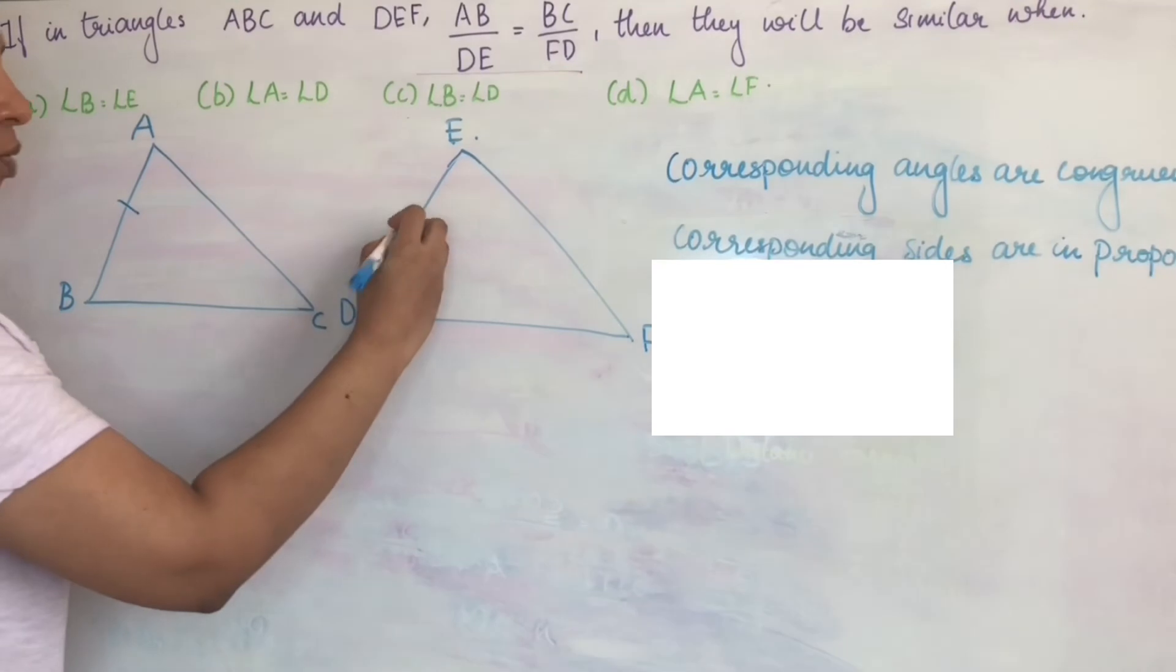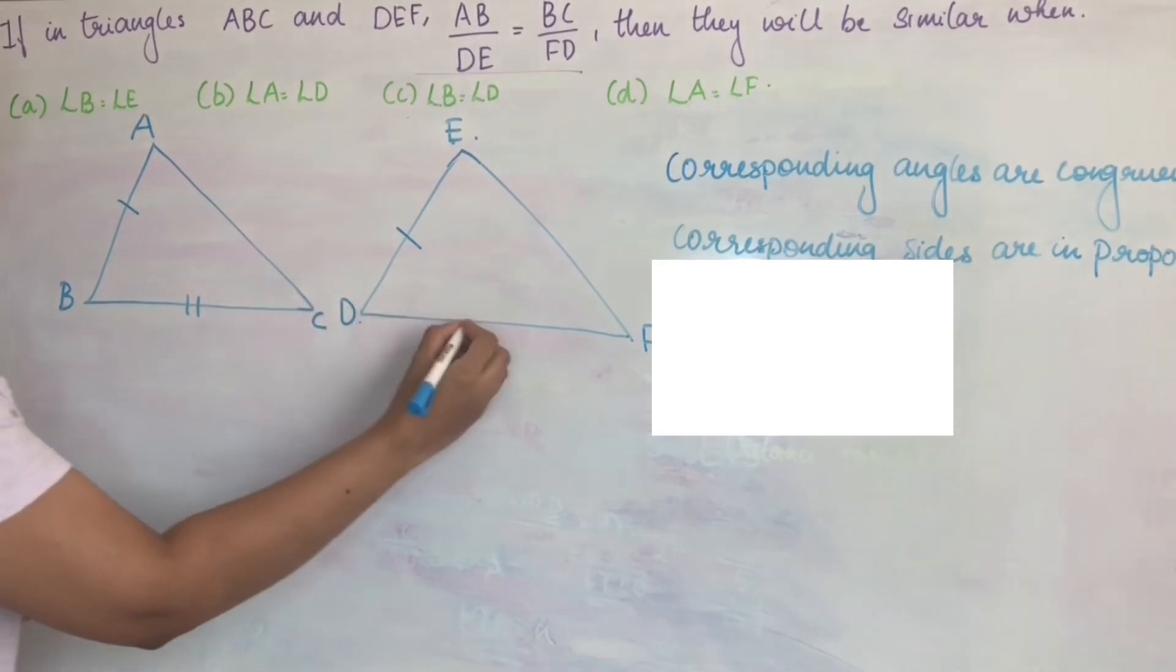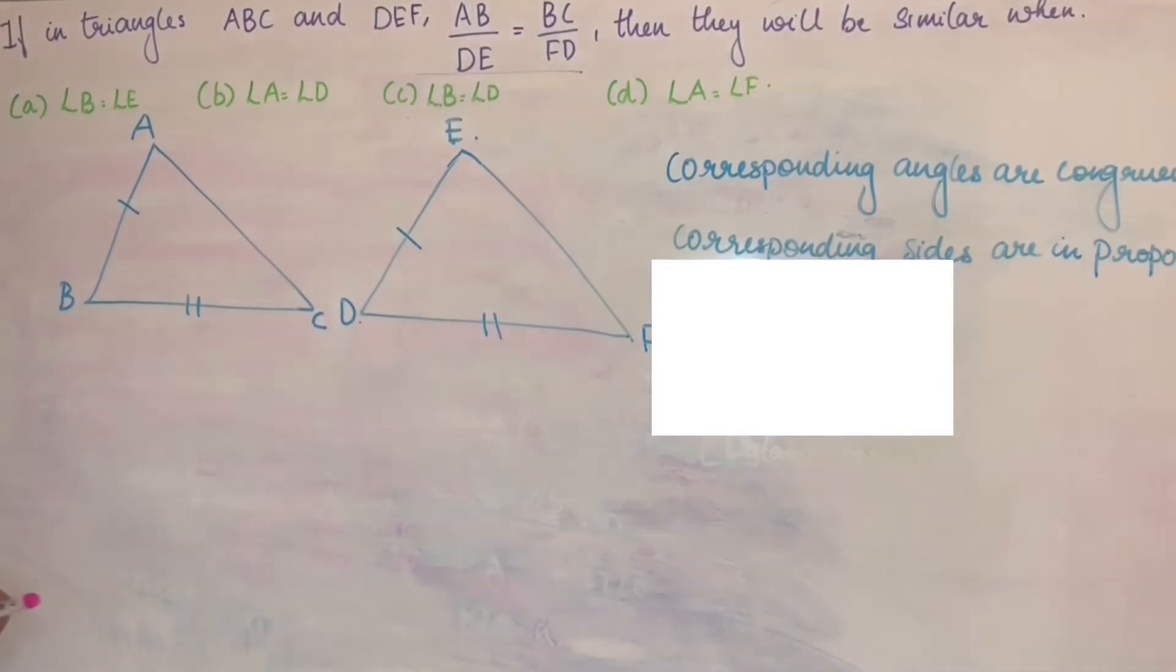AB is proportional to DE. Equal, proportional. And side BC is proportional to side FD. Given. Using SAS criteria,